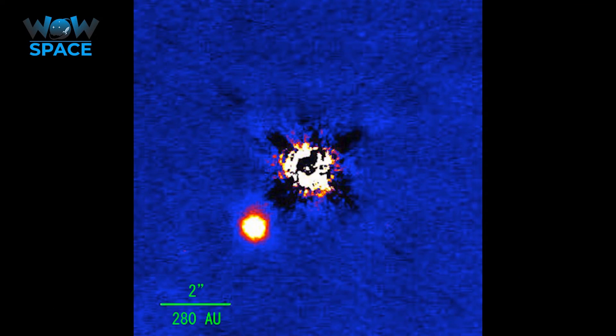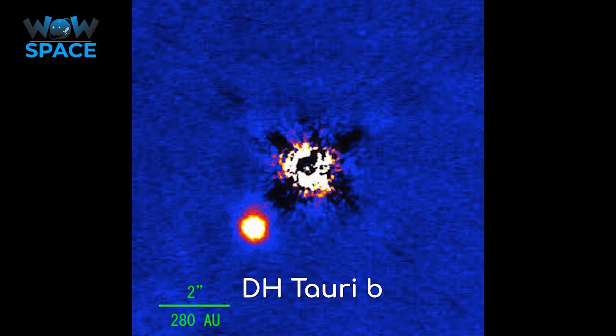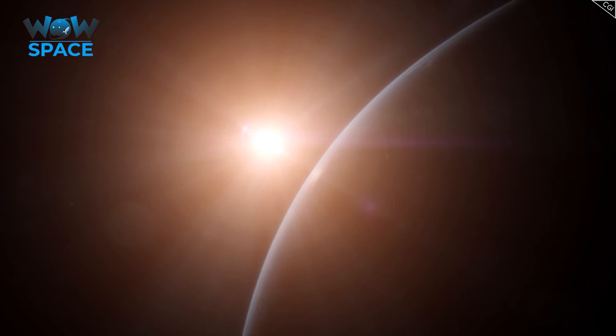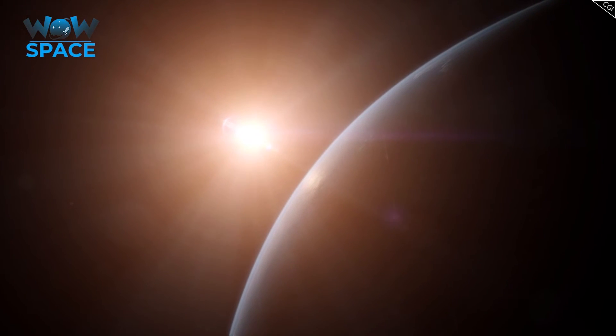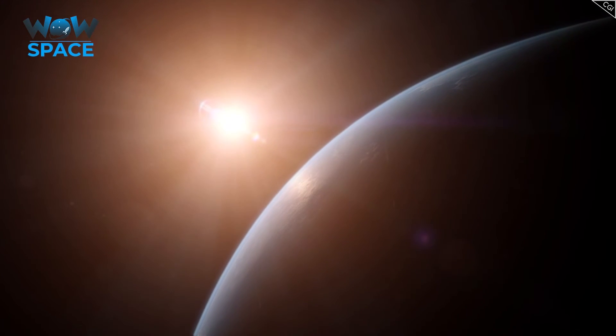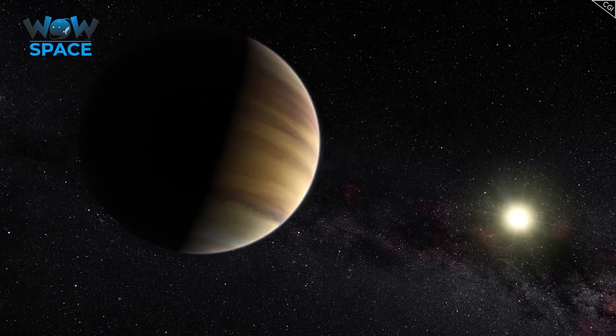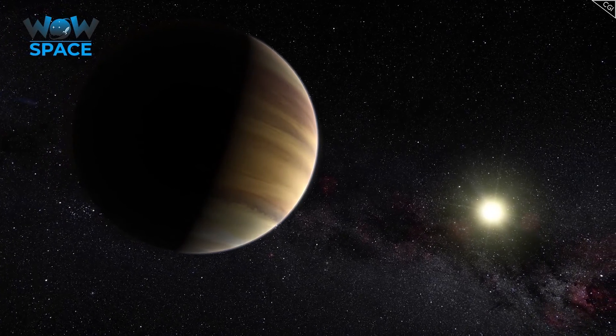Other contenders to this throne would be DHTori B and ROX 42BB. So, there we have it, some of the biggest exoplanets that we know of. And it's certainly feasible that somewhere out there, there is a planet bigger than its host star.